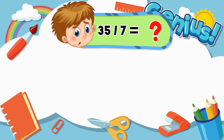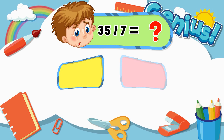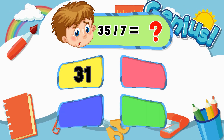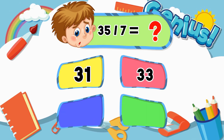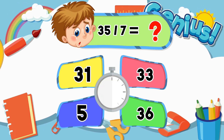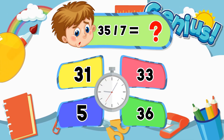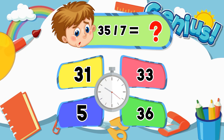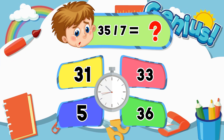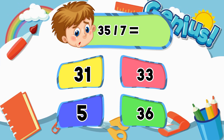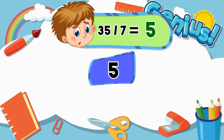What is thirty-five divided by seven? Thirty-one, thirty-three, five, thirty-six. Five.